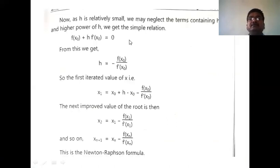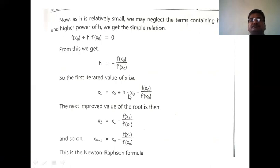By neglecting the second and higher order terms, we have f(x₀) + h·f′(x₀) = 0. Therefore the value of h = −f(x₀) / f′(x₀). And then x₁ = x₀ + h = x₀ − f(x₀)/f′(x₀). That is the formula for x₁: x₁ = x₀ − f(x₀)/f′(x₀).